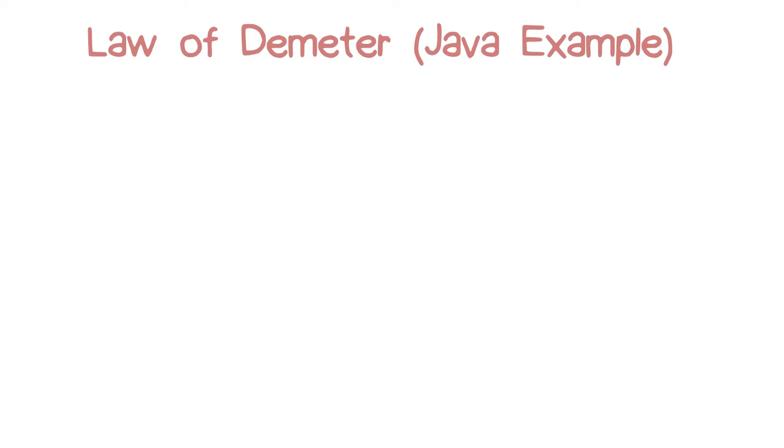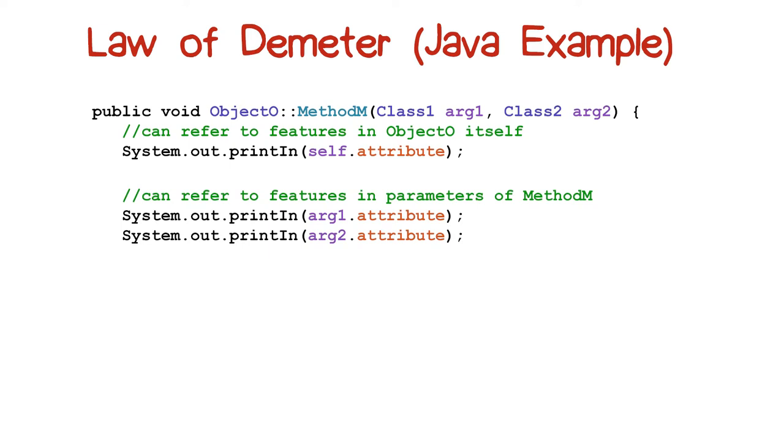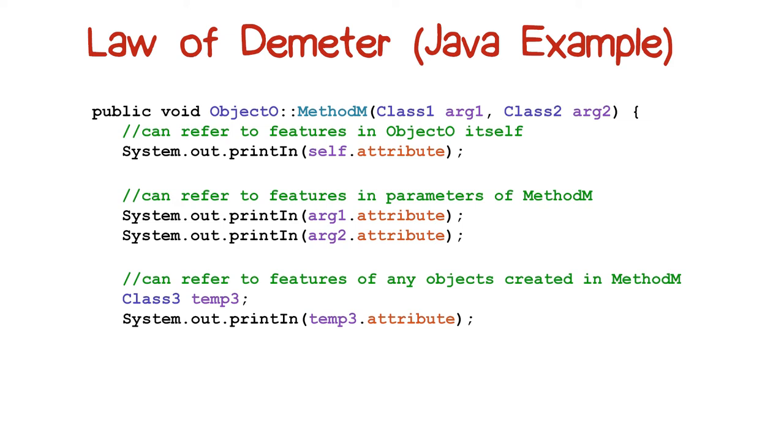You can refer to features in O itself. You can refer to features in classes that are the classes for the parameters that go to method M. You can refer to any objects created or instantiated within M.